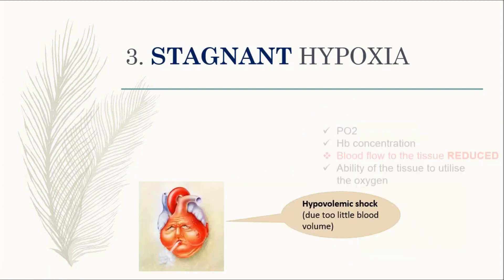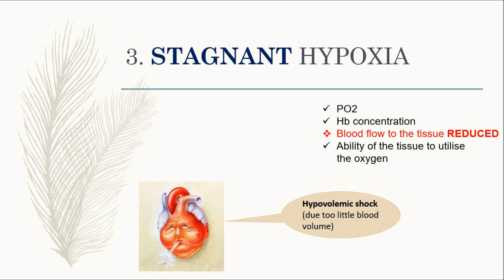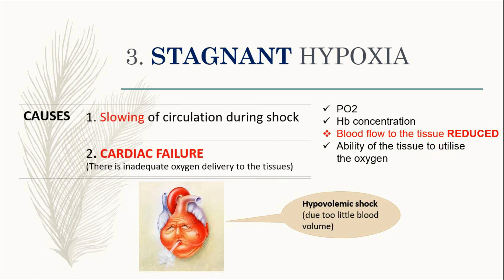The third one is stagnant hypoxia. This type of hypoxia occurs when there is a reduction of blood flow to the tissue, but the partial pressure of oxygen is normal, the hemoglobin concentration is normal, and the tissue is able to utilize the oxygen. This happens when there is slowing circulation during shock — for example, when there is little blood volume, so the heart cannot pump enough blood to the body and the oxygen delivered to the tissue is reduced. The second cause is cardiac failure, when there is inadequate oxygen delivery to the tissue.